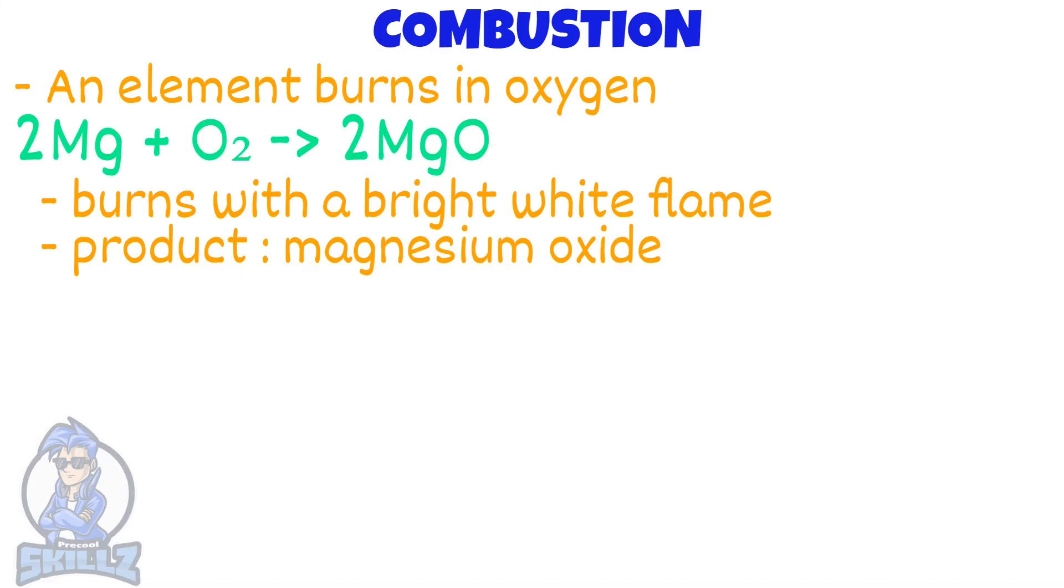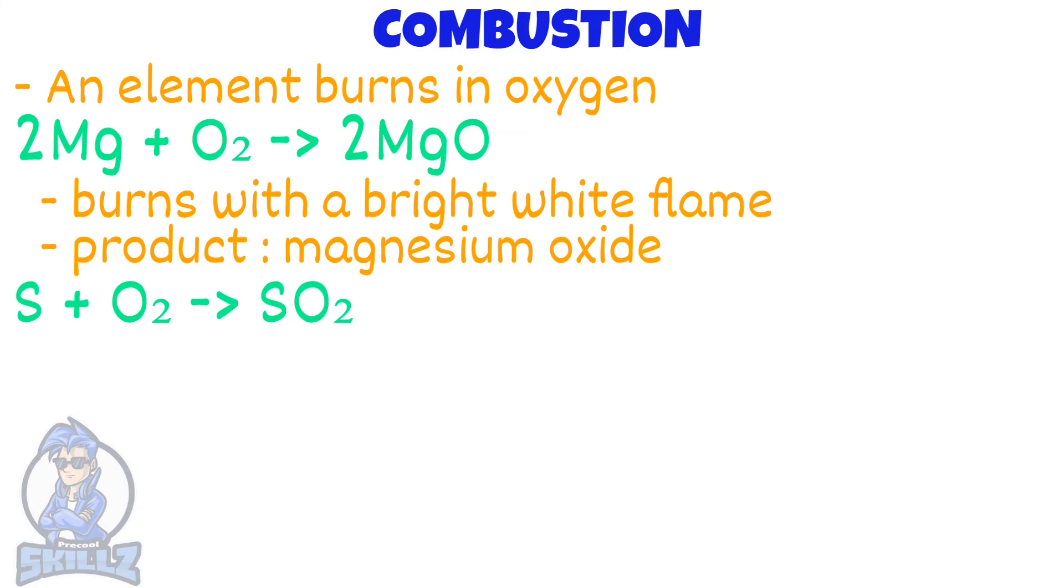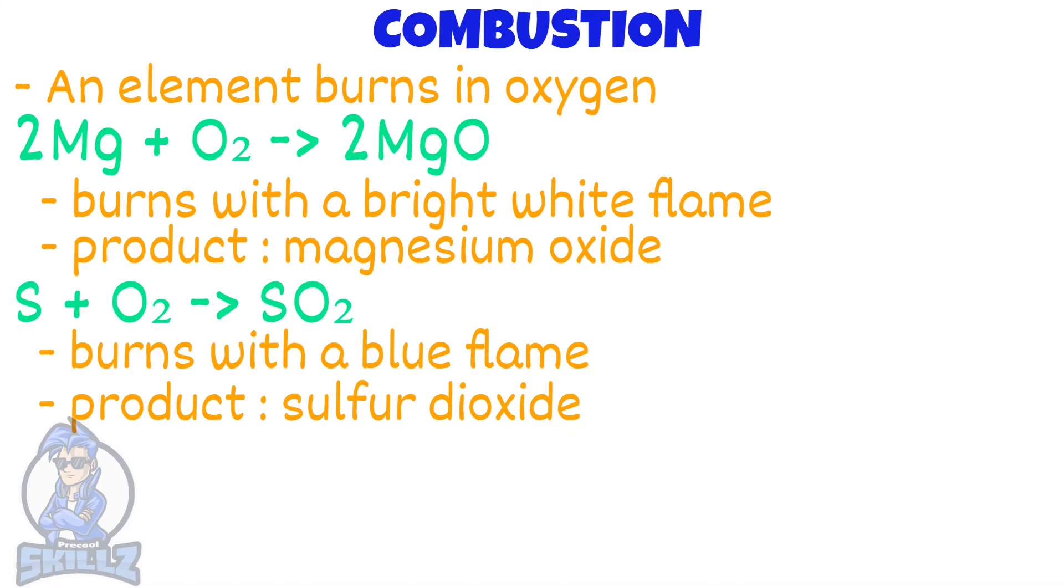Next, you can see the equation of sulfur reacting with oxygen. It burns with a blue flame, resulting in sulfur dioxide, a colorless poisonous gas. Next, hydrogen. Hydrogen burns in oxygen with a pale blue flame. The product is water.